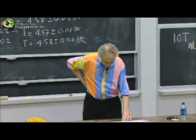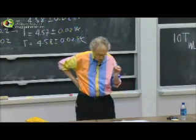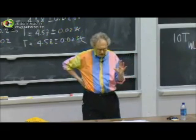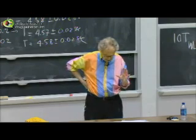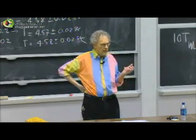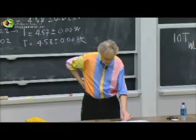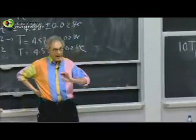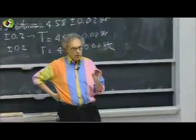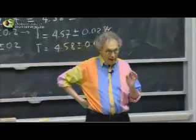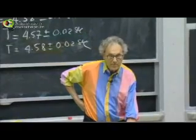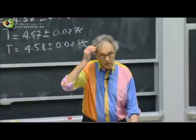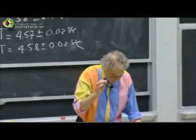If I scatter white light off very small particles, then the blue light is scattered more than the red light. We give that a name in physics — we call that Rayleigh scattering. Rayleigh scattering only happens when the particles off which the white light scatters are smaller than a tenth of a micron — that means a thousand times smaller than the thickness of your hair. So it has to be very, very small.